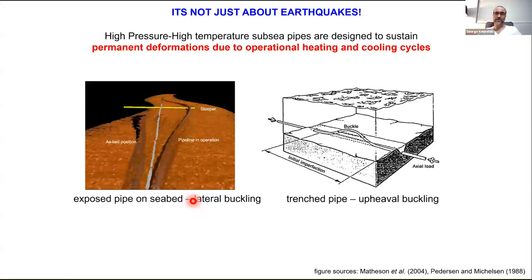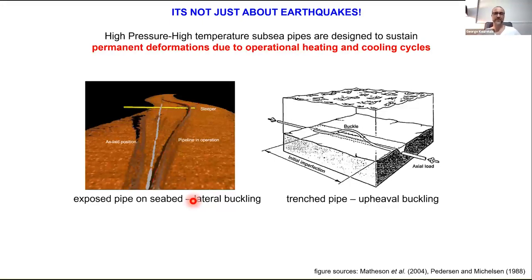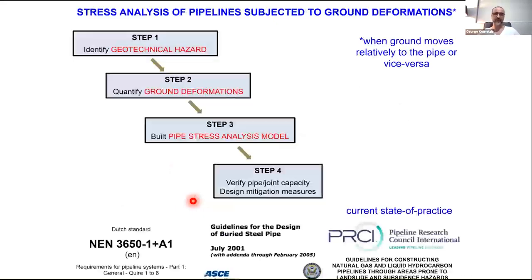When it comes to the design of pipelines to resist ground movements, fault crossings are not the only concern for operators. Especially the issue of ground subsidence due to over-pumping of aquifers for irrigation is a main concern for pipe authorities worldwide — particularly in California where NASA is measuring subsidence rates of the order of even 5 centimeters per month. It is not a concern for onshore pipes only. Relative pipe-ground movements are much more common and frequent for subsea pipes — only in this case it is the pipe that moves relatively to the ground due to temperature and pressure changes, and the main issue is fatigue, not ultimate limit state.